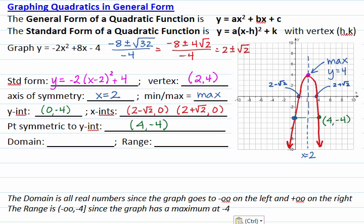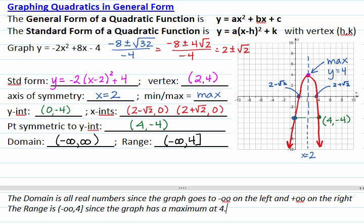Either from the graph or from the equation, we can see that the domain is all real values for x from negative infinity to infinity, and the range is values of y from negative infinity up to the maximum, which was 4, closed at 4.